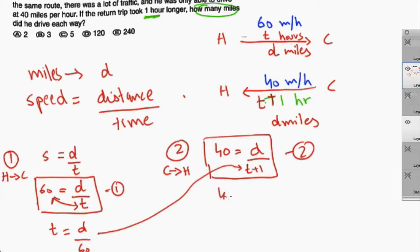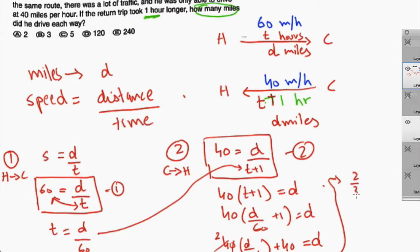But before I plug in, I'm going to rearrange my second equation also like this. Now, I'm going to plug in my expression for time from equation one. Open the brackets. Distribute what's outside. So I'll have 40 times D over 60 plus 40 equals D. Now, 40 times 60, this thing, basically, the zeros will cancel out. And I can simplify this to 2 over 3. I'm going to continue over here. So I'll have 2 over 3 distance plus my 40 equals to D.